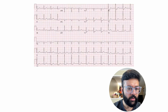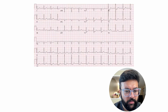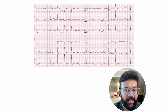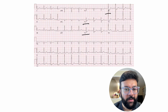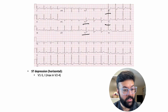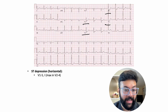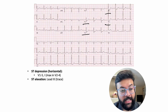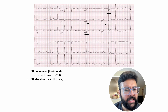Looking at the next case — pausing again for three seconds to give you time to think. What do you see here? These are ST depressions: you are seeing ST depression in V1 through V5, maximally in V2 to V4. You are also seeing trace ST elevation in lead 3, just slightly above the isoelectric line.